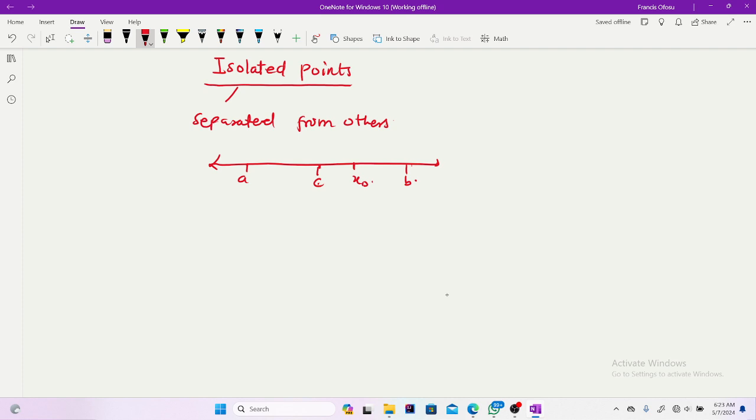So delta was mentioned in our previous video, that is neighborhood. If I take any delta, which is also called the radius, when I take any radius about this point X naught, if I don't find any member of the set... So let's say, before we start with isolated point, I'll first give you, let's say S, which is a member of all real numbers.